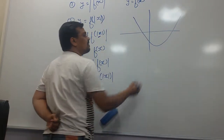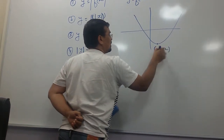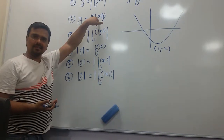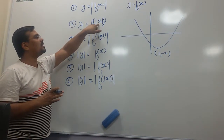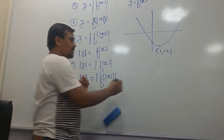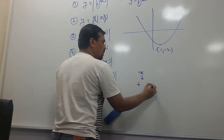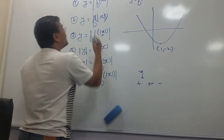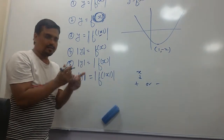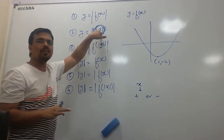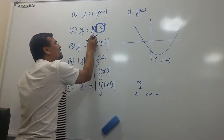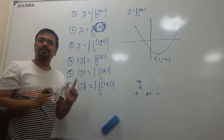If y equal to f(x) is a function, how to draw y equal to f of absolute value of x. Now this type of absolute value is on x. It means whether x is positive or negative, the input to the function would always be positive. So my function would always follow the positive x values.